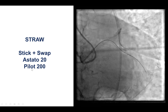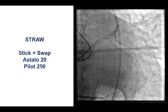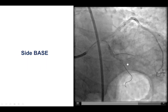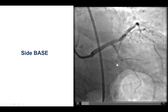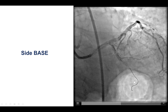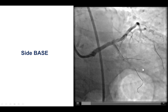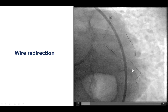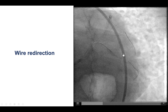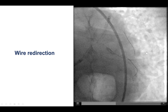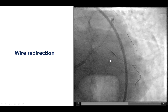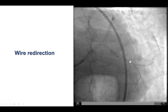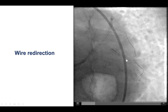We did the stick with an Astato 20 and the swap for the Pilot 200. The wire did actually enter into a branch, but this was the inferior branch of the obtuse marginal, not the main vessel going along the lateral wall of the heart. We had difficulty advancing a guidewire into the course of the obtuse marginal, but eventually, using the side-base technique — with a balloon inflated next to the origin of the inferior branch — we were working toward redirecting the wire.